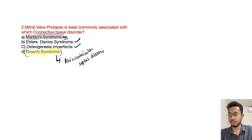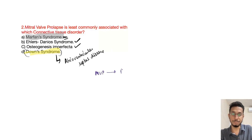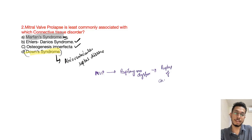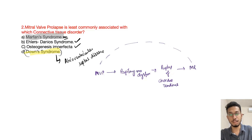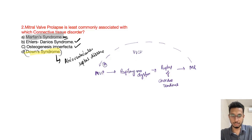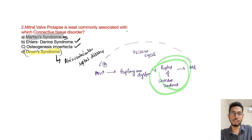Regarding the pathogenesis of mitral valve prolapse: if there is mitral valve prolapse, there will be papillary muscle dysfunction leading to rupture of chordae tendineae and formation of mitral regurgitation. This mitral regurgitation again leads to mitral valve prolapse, forming a vicious cycle. This is the primary pathogenesis of mitral valve prolapse. Additionally, chordae tendineae rupture and mitral regurgitation can lead to regional ventricular dysfunction.